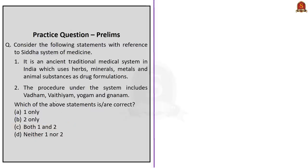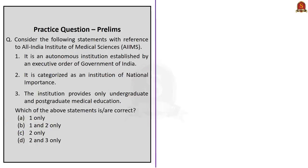The question about the Siddha system of medicine states it is an ancient traditional medical system in India which uses herbs, minerals, metals, and animal substances as drug formulations, and that the procedure includes Vatham, Vaithiyam, Yogam, and Jnanam. Both statements are correct, so the correct answer is option C: both one and two.